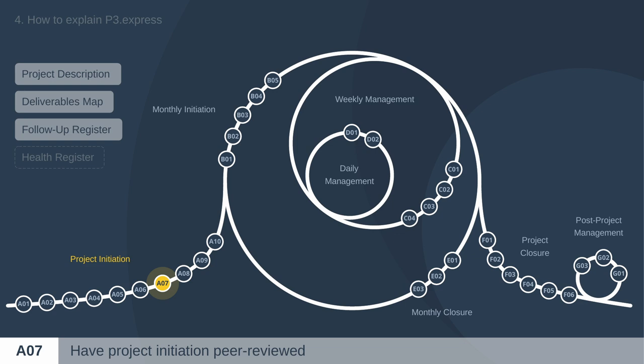P3 Express recommends asking a different project manager each time for the peer review, to help with the learning process across the organization. The peer review result goes into the fourth artifact — the Health Register — which is used for two purposes: results of peer reviews and results of stakeholder satisfaction evaluations. There are also monthly peer reviews in B2 and one peer review at project closure in F3. Peer reviews are very well received in practice, and as a trainer you should insist on their importance — even suggesting that if organizations implement nothing else from P3 Express, they should at least try peer reviews.